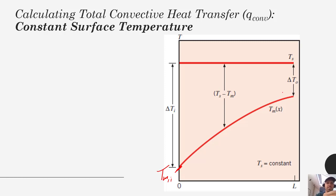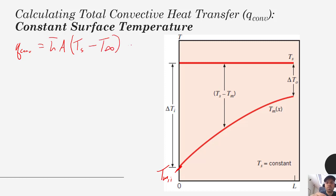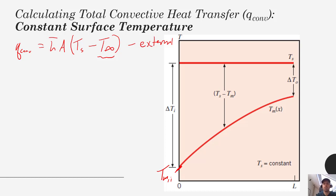We've treated convection, especially for external convection, a little bit more simply using Newton's law of cooling. Our Q convection equals the average heat transfer coefficient times the total area times the surface temperature minus the bulk fluid temperature. The difference for internal convection is that we don't have an infinite fluid that we can treat as constant, because as this fluid flows through our channel it itself is actually being heated or cooled — so this is not constant.